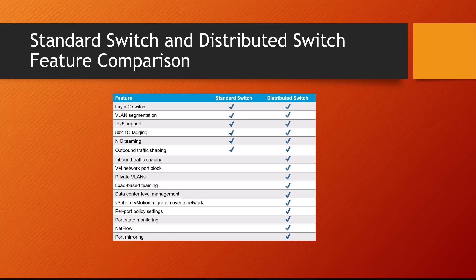So now you understand that on a VMware network we can create virtual switches, which provide communication and connectivity between virtual machines. There are two types: the standard switch, similar to a network switch connecting multiple devices, and the distributed switch, which sits at a higher level above the normal switches. In the next video, I'll do a practical demonstration of how to create standard switches with virtual machine port groups. Thanks for watching — stay tuned and subscribe.